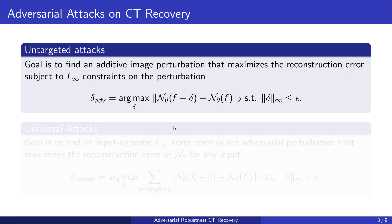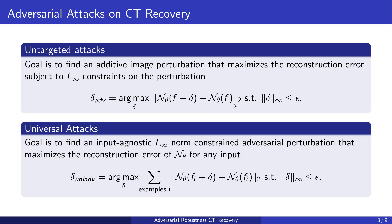We first consider untargeted attacks. Here, the aim is to find an additive norm-constrained perturbation in the measurement domain that maximizes the reconstruction error. We also consider an input-agnostic version of this attack to maximize the reconstruction error for any input by optimizing over several examples, which are the so-called universal perturbations.